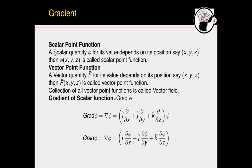For gradient, we require a scalar point function and a vector point function. A scalar point function is a scalar quantity phi whose value depends on its position (x, y, z). Then phi(x, y, z) is called a scalar point function — that is, a function of x, y, z free from i, j, k. The space related to such a scalar function is called a scalar field.